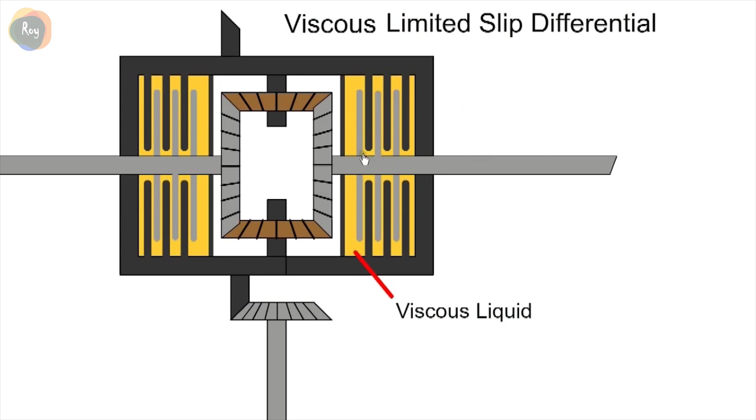If one wheel slips, the plates will rotate at different speeds. The viscous fluid will allow slow relative movements of the shafts during cornering, but will oppose a high-speed difference with a slipping wheel. This type of LSD is activated by a difference in speed between the plates.